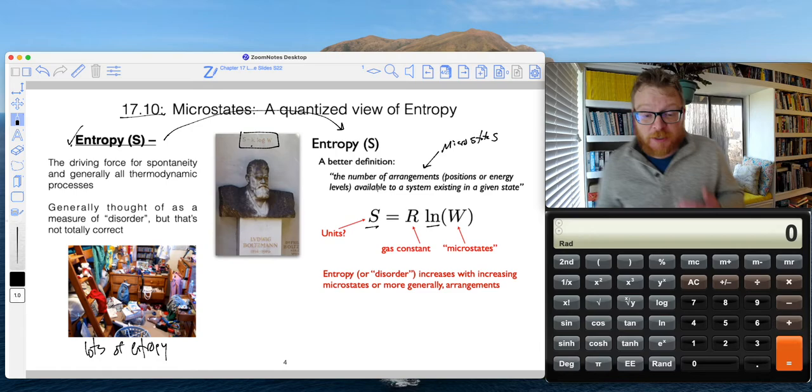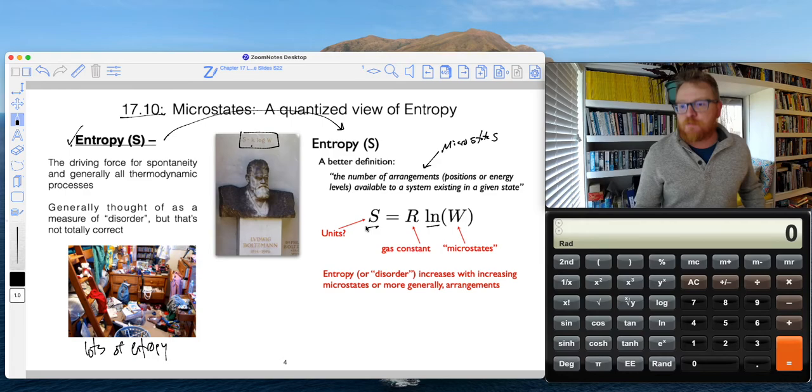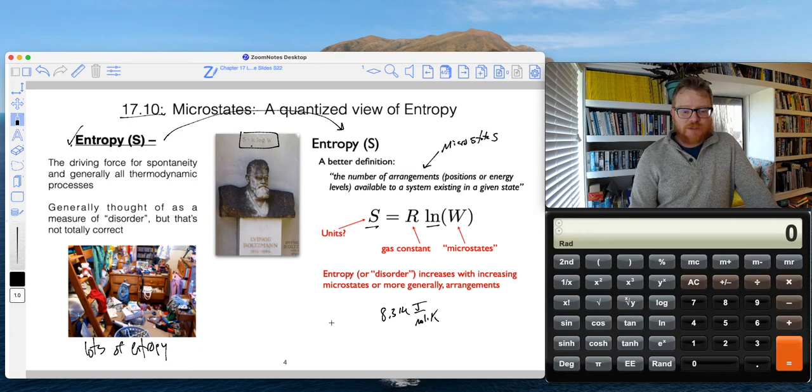So what does all this mean? Well, this W is this number of microstates, so the number of unique ways we can arrange something. We take the natural log of that number, multiply it by the gas constant, and that actually gives us a numerical value of entropy. If we think about the units, we're going to use the 8.314 joule per mole K flavor for R. So the units for entropy are joule per mole per Kelvin.